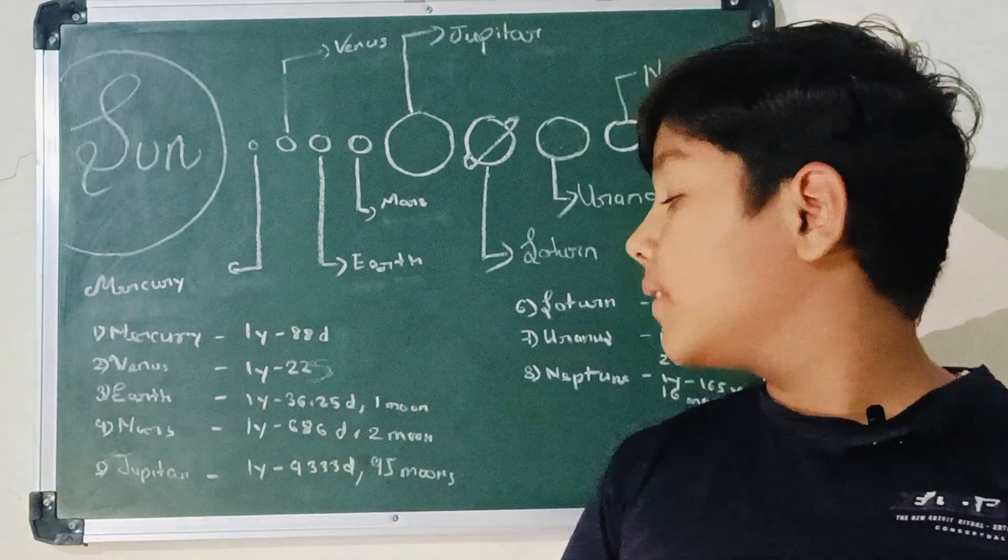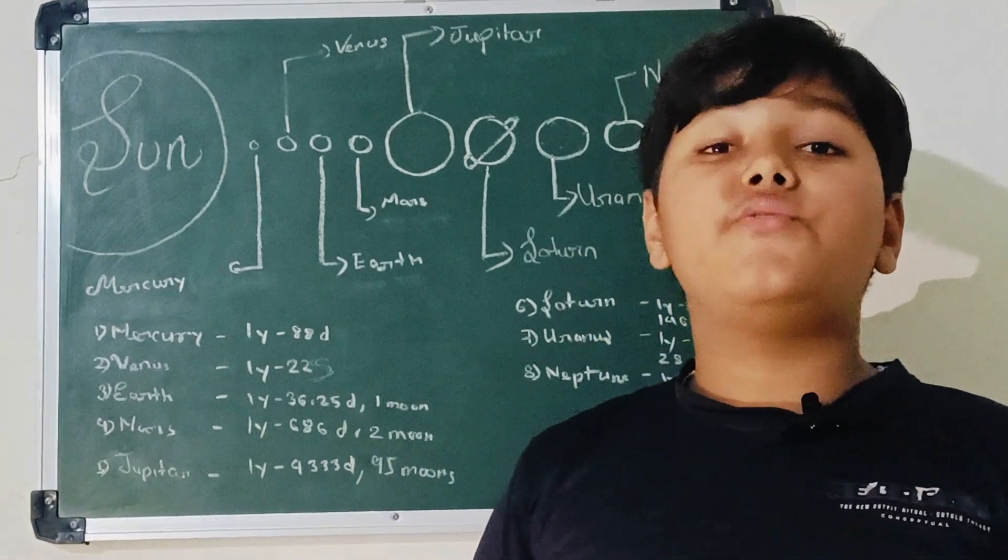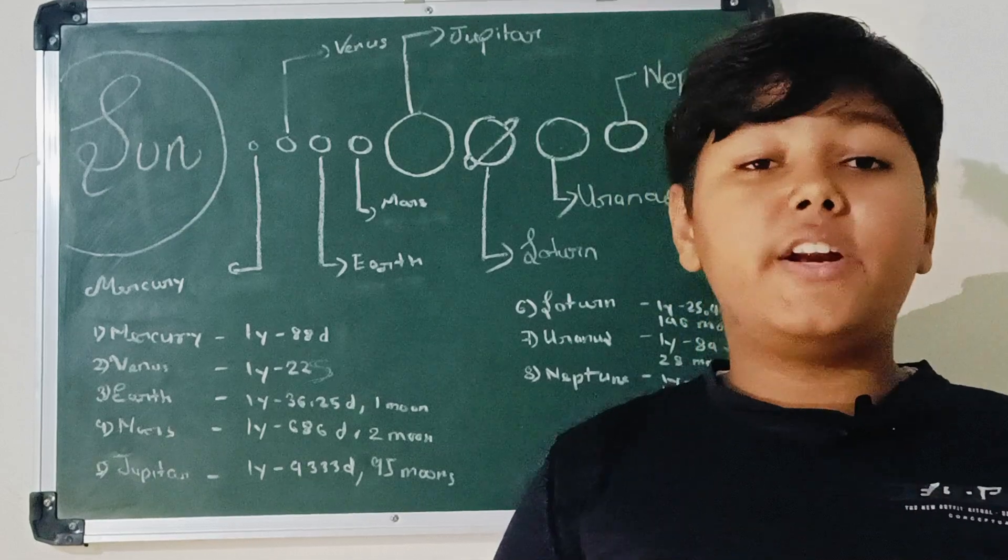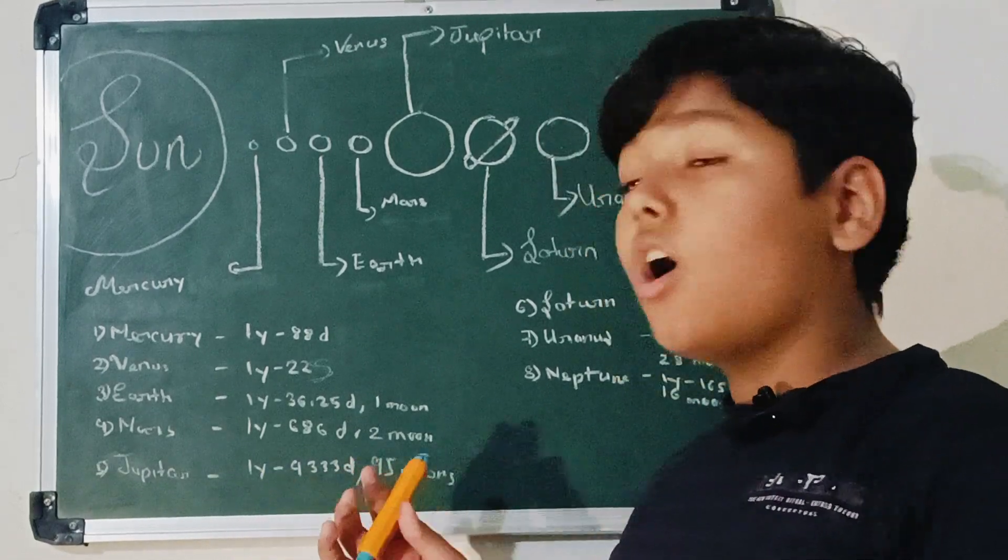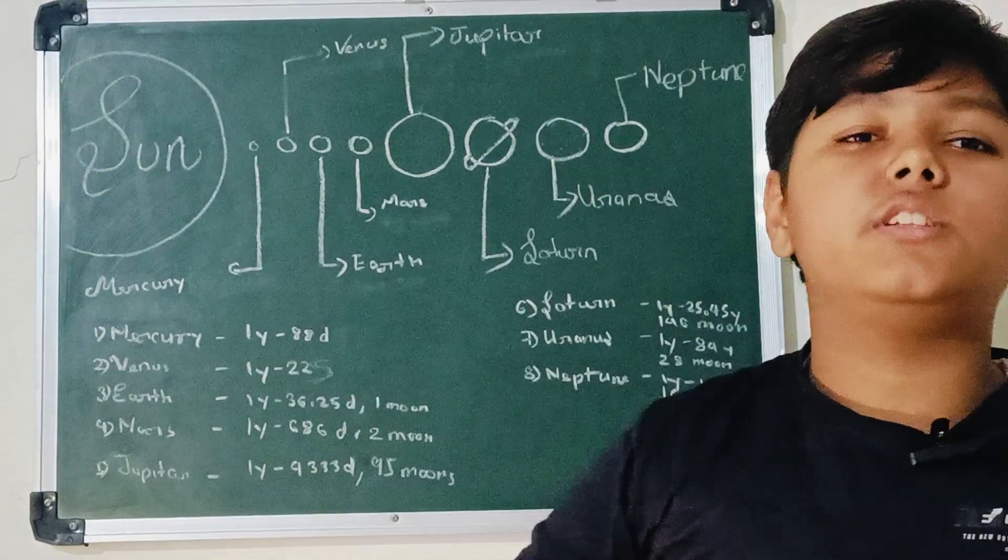After that, Jupiter. One year is equal to 4,333 days. It has 95 moons. Suppose how many moons it has.